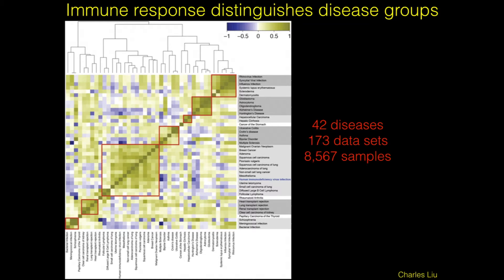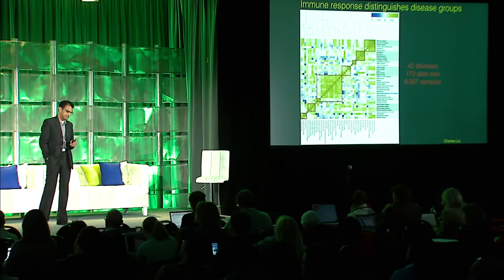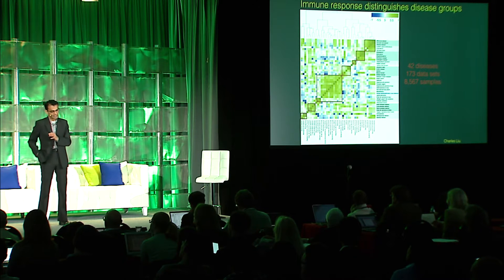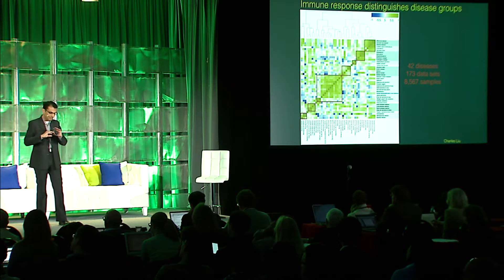Charles Liu, a high school student in my group last year, collected 173 datasets — manually going through data from 42 diseases and over 8,500 human clinical samples. He applied a framework we developed that allows you to take all of this very heterogeneous data into a single analysis and identify robust disease signatures. For every one of these 42 diseases, there were at least two datasets from independent sources, and he identified a disease signature for each, then did a simple disease-by-disease correlation using Spearman's.